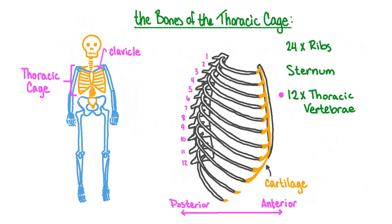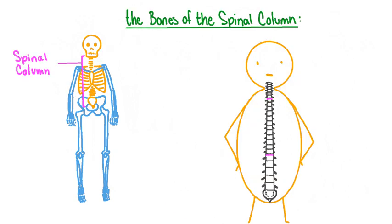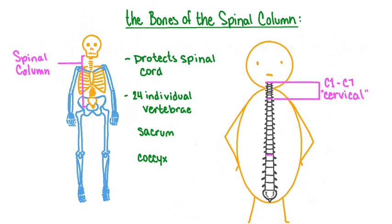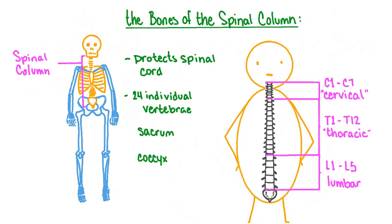The spinal column, also called the vertebral column, stretches from the base of the skull to beneath the pelvis. It supports and protects the delicate spinal cord, which is responsible for relaying messages to and from the brain. The bones of the spinal column are called vertebrae, and there are 24 individual vertebrae in the spinal column. The top seven are called cervical vertebrae — cervical meaning referring to the neck. Beneath these are the 12 thoracic vertebrae, each of which connects to a pair of ribs. Next are the five lumbar vertebrae, which are the vertebrae of the lower back.